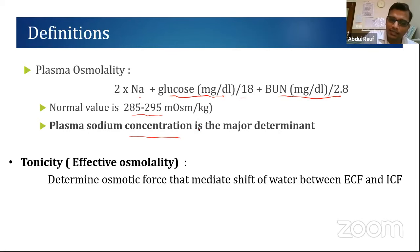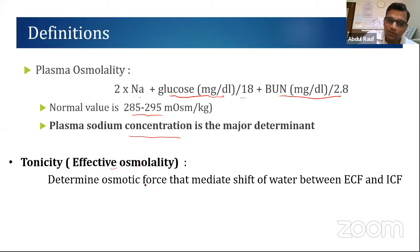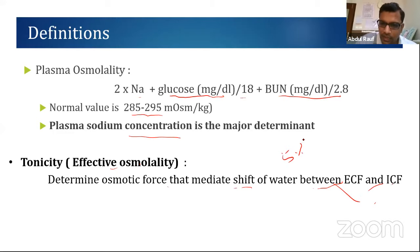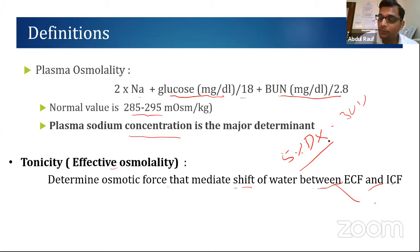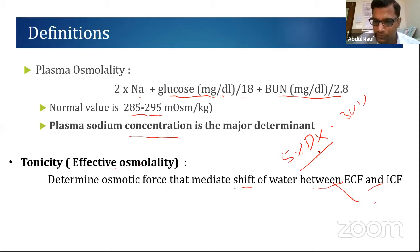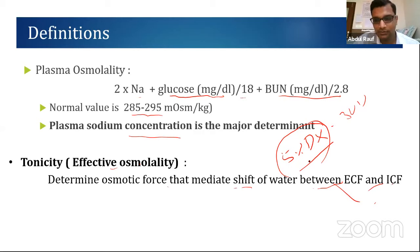Tonicity is effective osmolality. Not all solutes with osmolarity contribute to tonicity. Tonicity determines the osmotic force that mediates shift of water between ECF and ICF. For example, 5% dextrose has an approximate osmolality of 300 — it is isosmolar — but it is hypotonic because dextrose is an ineffective osmol. Dextrose immediately diffuses to tissue and won't exert any osmotic force, which is why you never give a fluid bolus with 5% dextrose.